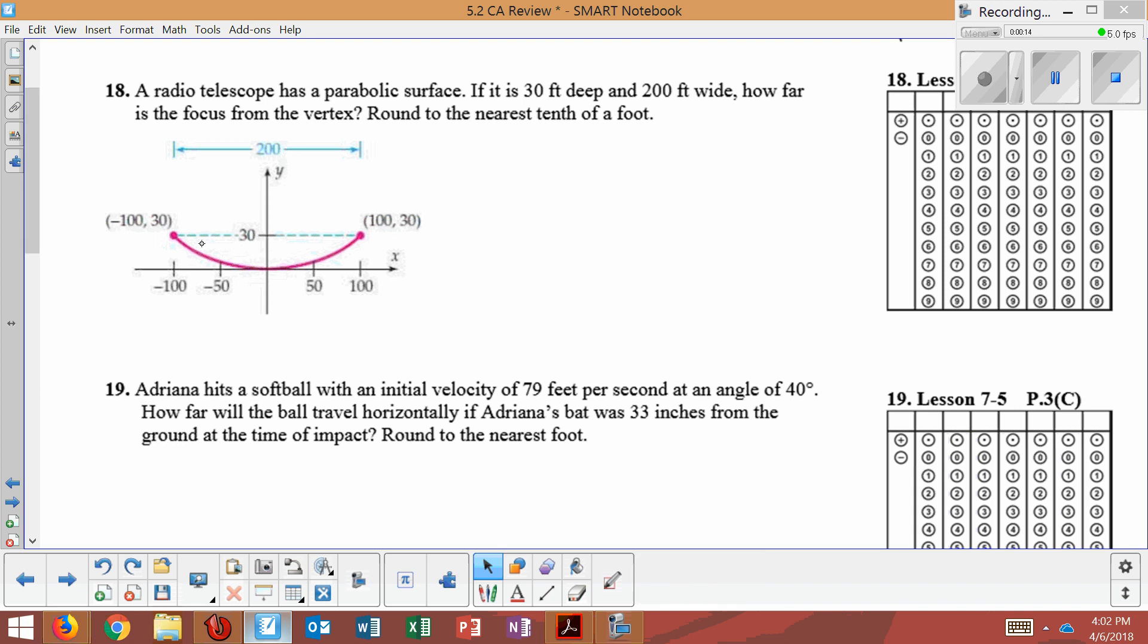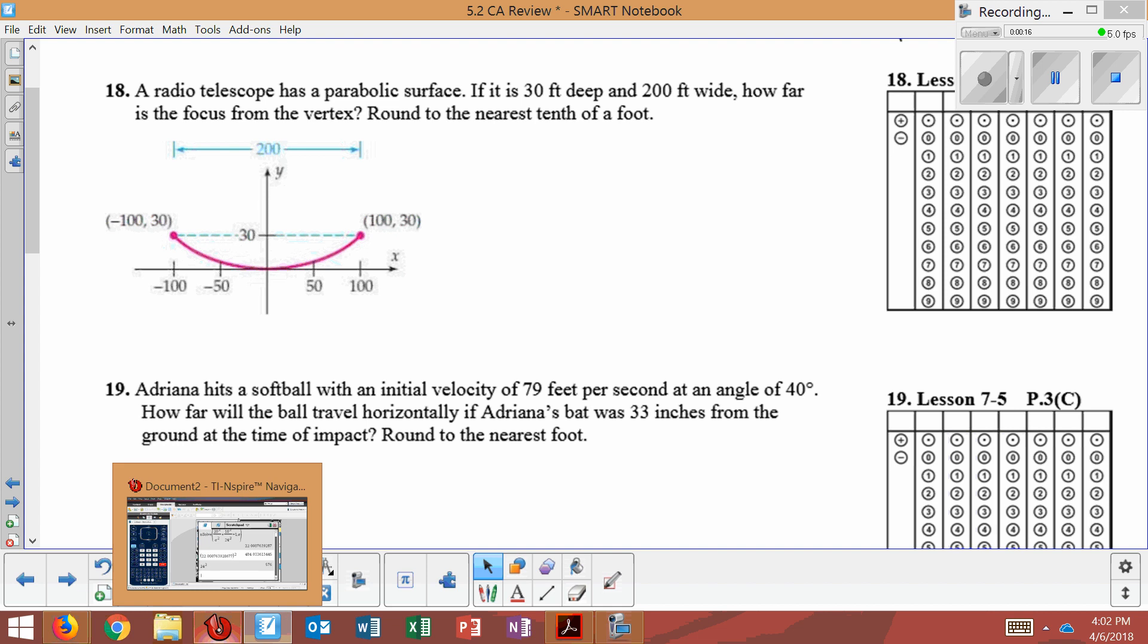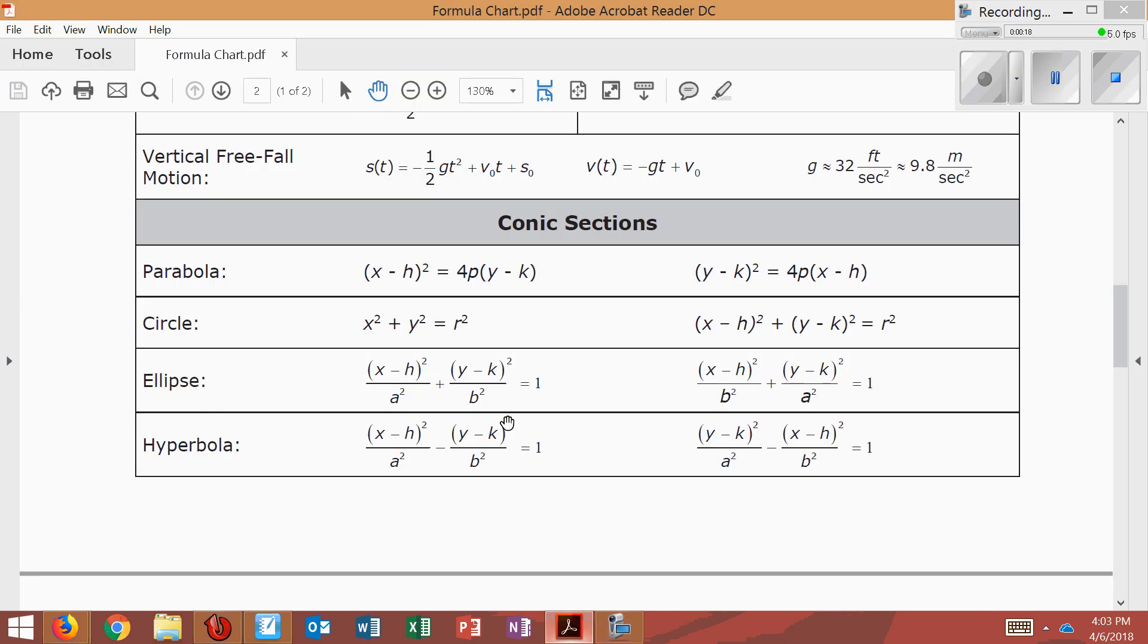So first, let's figure out which equation we're going to use. It's a vertical parabola, so I need the P to be next to the Y. That's what makes this vertical. So this would be a horizontal, this is vertical. So I'm going to use that formula.